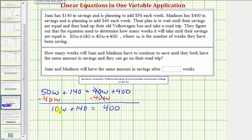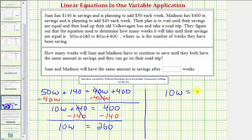The next step is to isolate the W term. So to undo this addition, we'll subtract 140 on both sides of the equation. So now we have 10W equals, 400 minus 140 is equal to 260. So now we have the equation 10W equals 260.